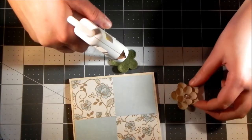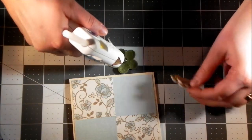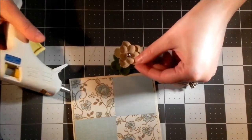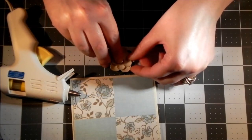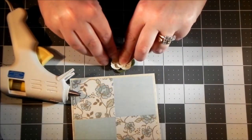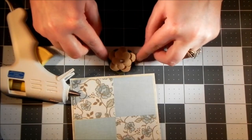Put a dab of hot glue right in the middle of my flower. Oops, that's a little bit more than a dab but that's okay. I'm going to put it on there a little off center, or not off center but a little sideways so the flower petals show through.